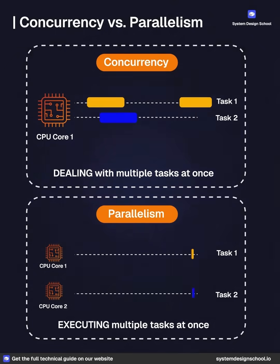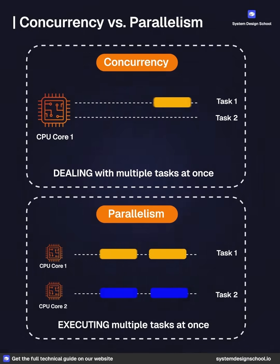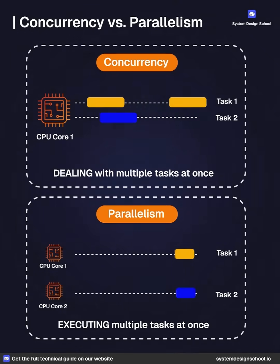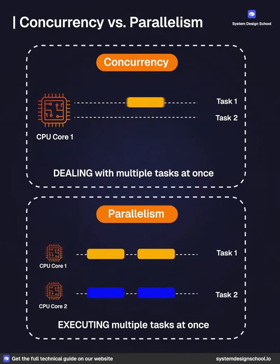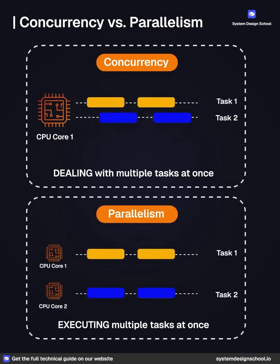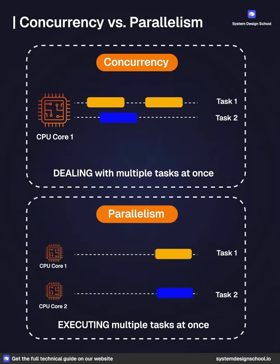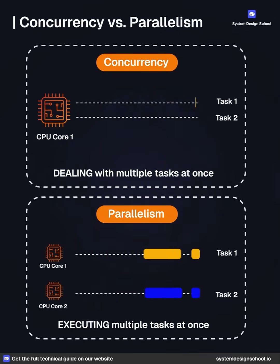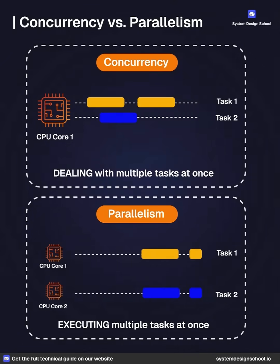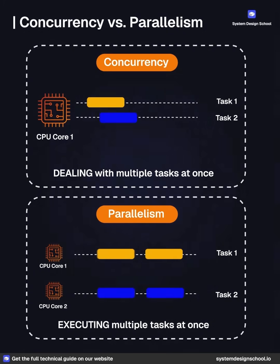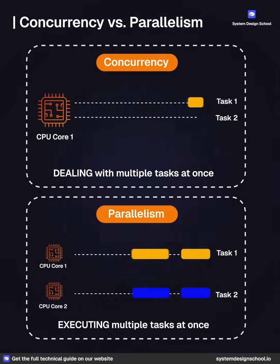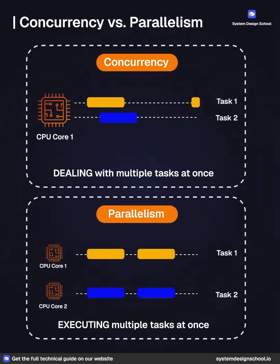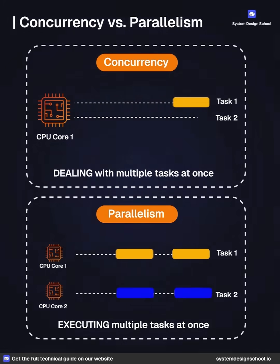Key difference: concurrency is about structure and coordination, while parallelism is about simultaneous execution. Concurrency means managing multiple tasks at once, while parallelism means executing multiple tasks simultaneously. They're related but serve different purposes in system design and performance optimization.